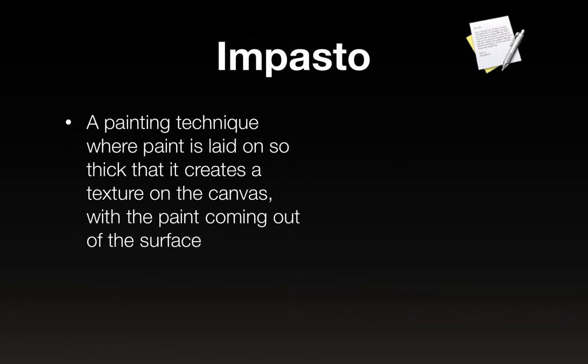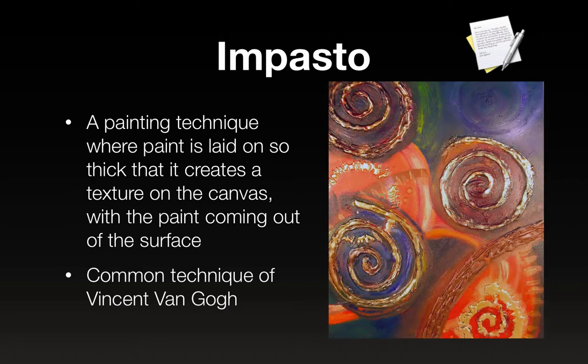Impasto is just a painting technique — it's nothing we're going to do in this class, but it doesn't really fit into any other unit. Basically the paint is laid on so thick that it creates a texture on the canvas where the paint is actually coming out of the surface. This is a technique that Vincent van Gogh was known for. If you were to touch this painting, you would actually feel that it's bumpy — you would actually feel the ridges.